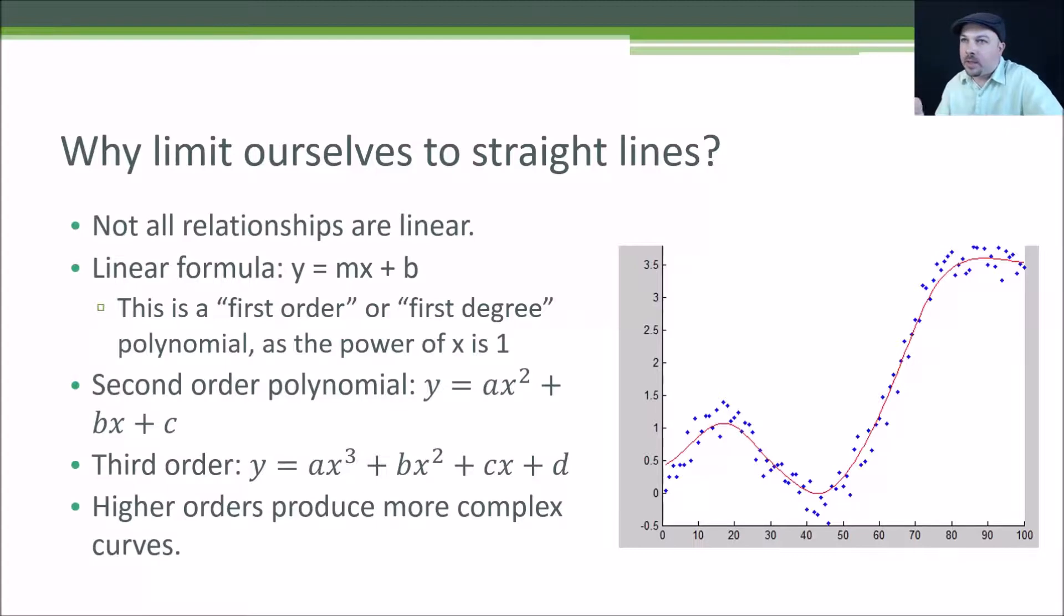Not all relationships are linear, but linear regression is just one example of a whole class of regressions that we can do. If you remember, the linear regression line that we ended up with was of the form y = mx + b, where we got back the values m and b from our linear regression analysis. This is just a first order or first degree polynomial, and the order or degree is the power of x that you see.